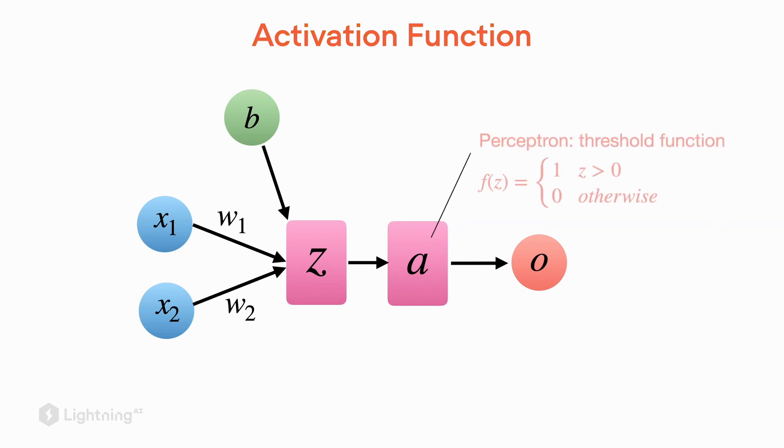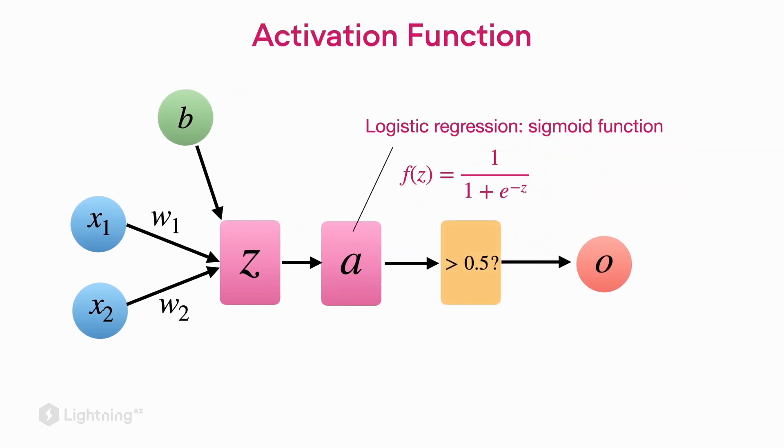We also saw that the perceptron has this threshold activation function, and in the case of logistic regression, we had this slightly more complicated activation function followed by a threshold function. Now let's take a look at this activation function, the so-called logistic sigmoid function.